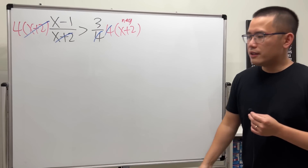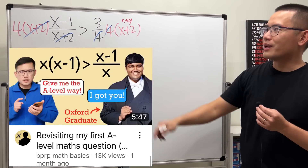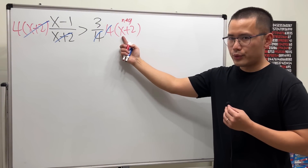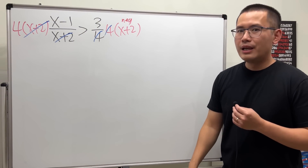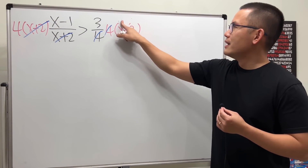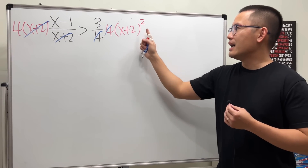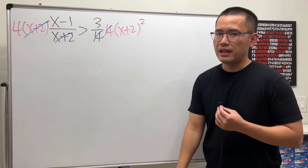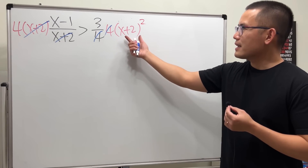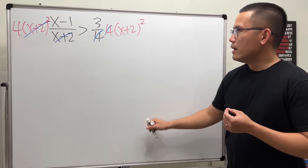This is the correct approach from the A-level syllabus. The factor x plus 2 can sometimes be negative, and we don't want that uncertainty when multiplying both sides. So let's change it so that the multiplier is never negative. If we raise x plus 2 to the second power, then x plus 2 squared is never negative — so multiply both sides by x plus 2 squared instead.